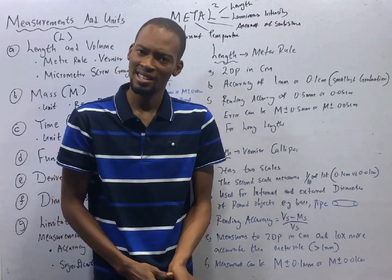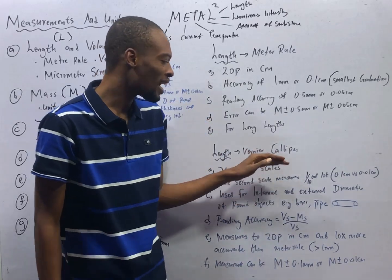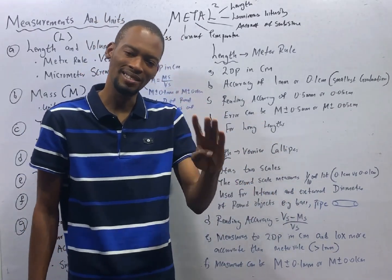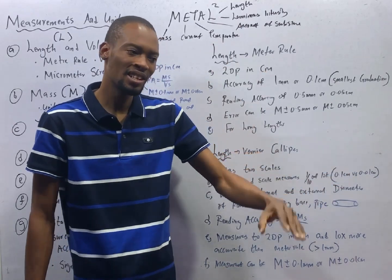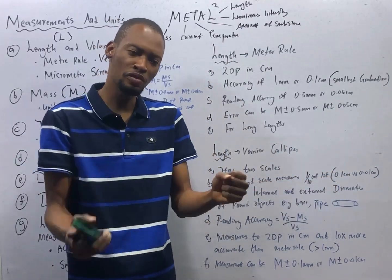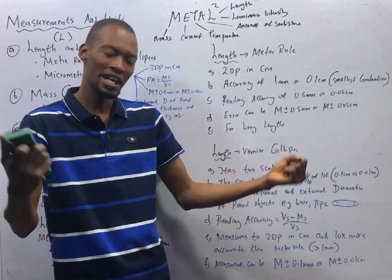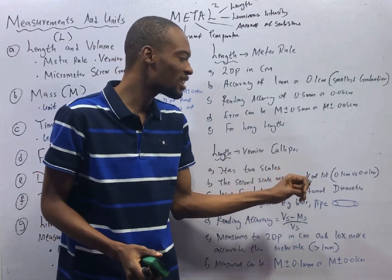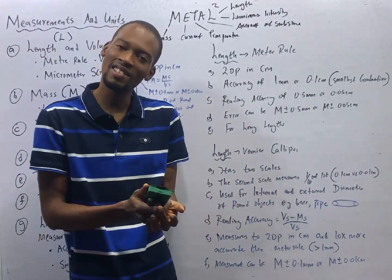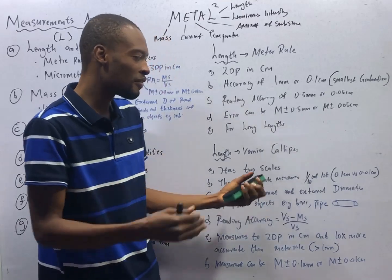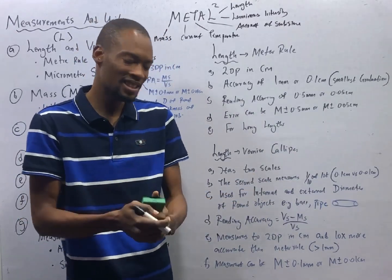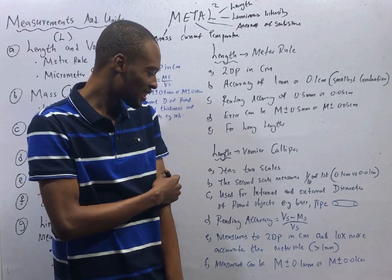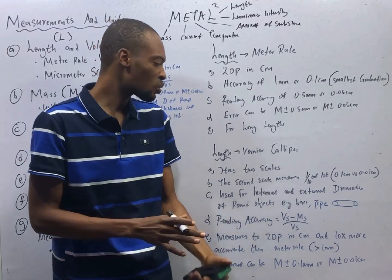Then vernier calipers. A vernier caliper is an instrument used to measure length. It has two scales: one is called the main scale and the second is the vernier scale. The main scale is fixed and the vernier scale is movable. The vernier scale measures one-tenth of the main scale — so if the main scale is 0.1 centimeter, the vernier scale reads 0.01 centimeter. It is used for internal and external diameters of round objects.